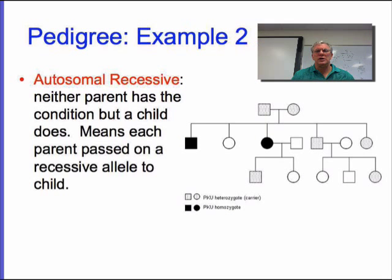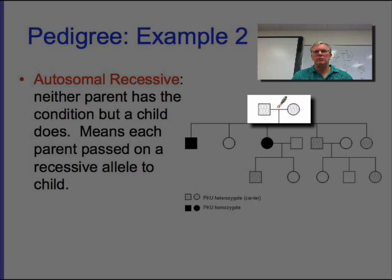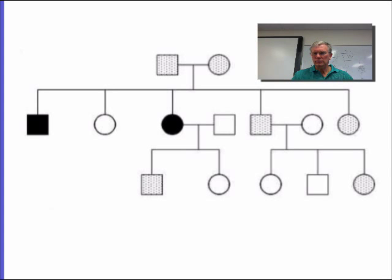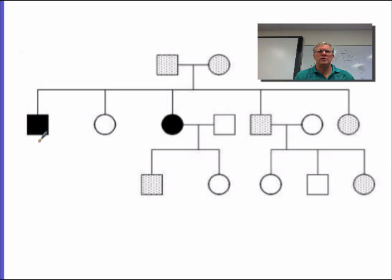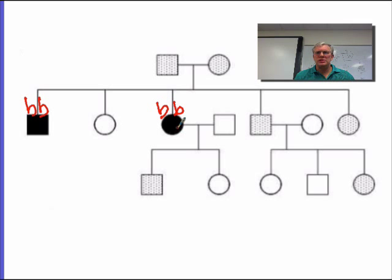Let's move on to another example. This is an example of a recessive transmitted disorder on an autosome. Notice that neither parent has the disorder, but there are children that have it. When you have a recessive linked disorder like this, in order to have the condition you have to have two recessive alleles, so we automatically know the genotypes of anybody that has the disorder. Let's use big B and little b. Everybody that has the disorder is going to be little b, little b.